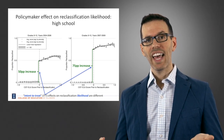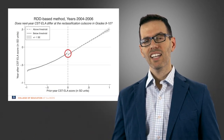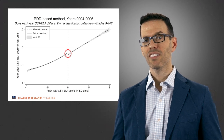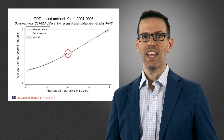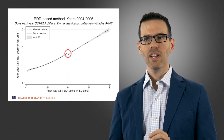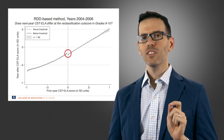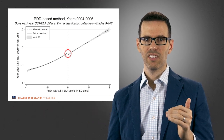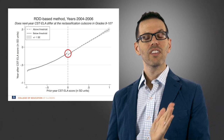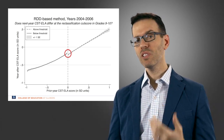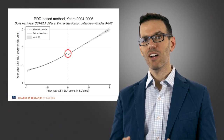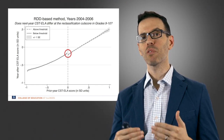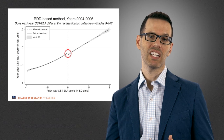Now we look at the effects of getting that extra point on subsequent outcomes. The X-axis is the same, but the Y-axis now shows next year's performance on a standardized test of English Language Arts. Right at the threshold — the only kids we can compare in this design — we see that getting an extra point and having a higher likelihood of reclassification is associated with lower performance on next year's achievement test. This suggests that reclassified students perform worse, while those who remain English learners perform better, indicating this may not be an optimal transition point.